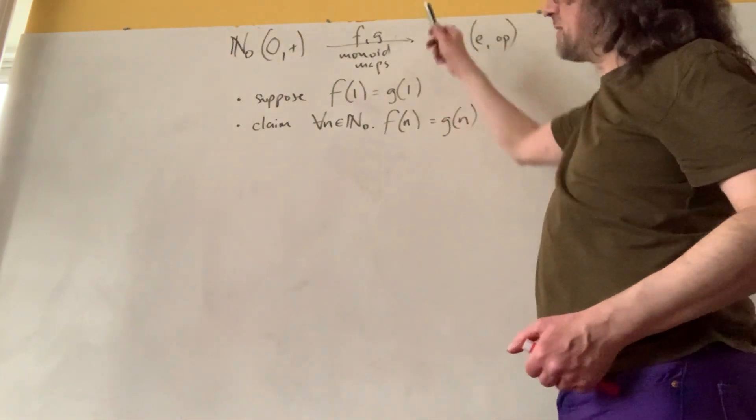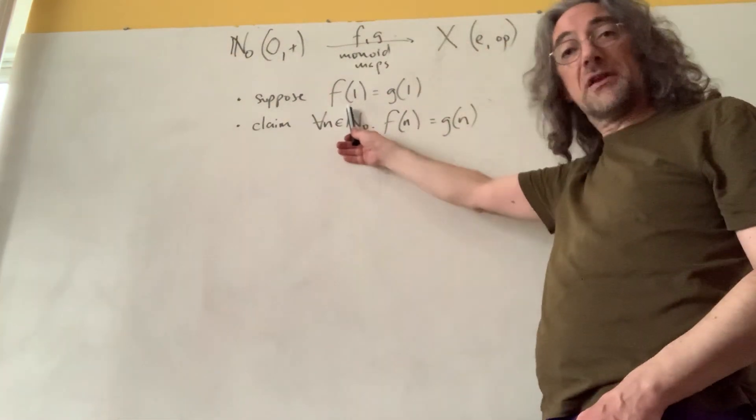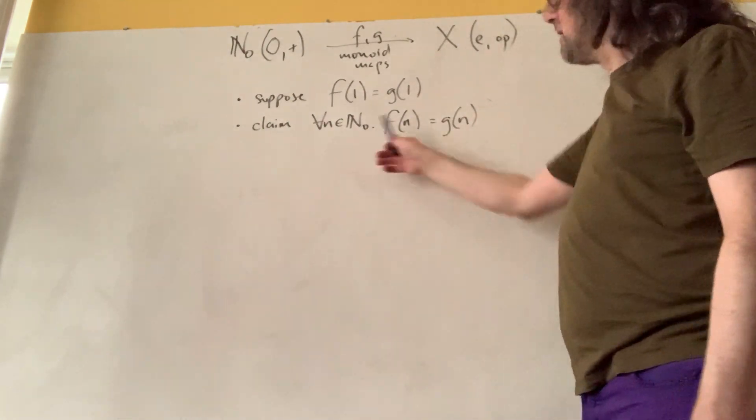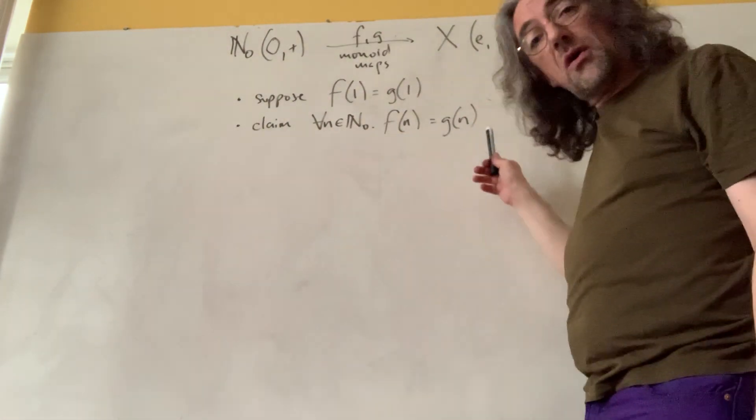That's to say, if I've got two of them, f and g, and I know that f of 1 equals g of 1, then these two are always equal.